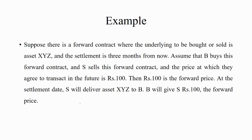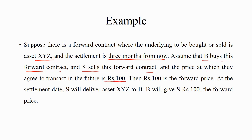A basic example: suppose there is a forward contract where the underlying to be bought or sold is asset XYZ and the settlement is three months from now. Assume that B buys this forward contract and S sells it — meaning B is the buyer of asset XYZ and S is the seller. The price at which they agree to transact is 100, which is the forward price K. At the settlement date, S will deliver asset XYZ to B and B will pay 100 rupees to S.